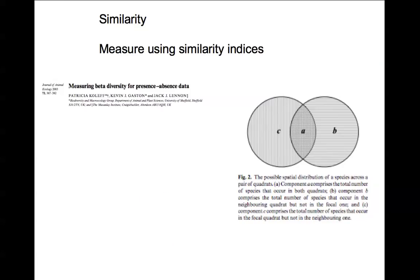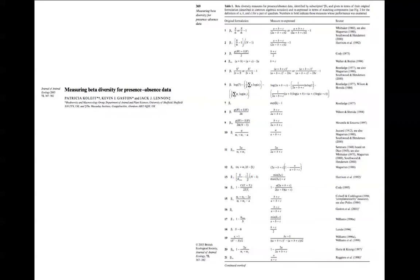In class we used the Bray-Curtis and Jaccard's index, but there are actually many more. Here's a list of indices numbered 1 through 22 — in the vegan package in R you can just enter the number and it has all these indices pre-programmed. There are many different reasons for the different indices and they are calculated in many different ways.